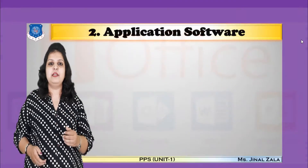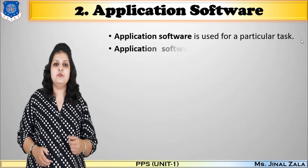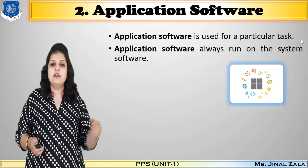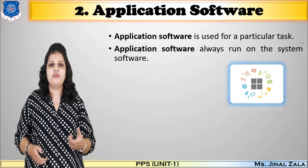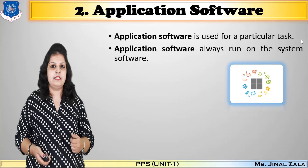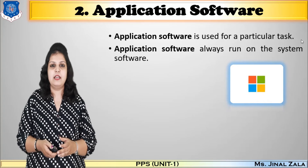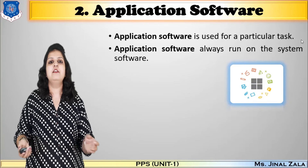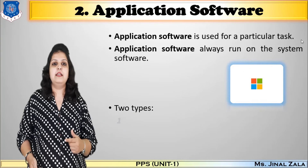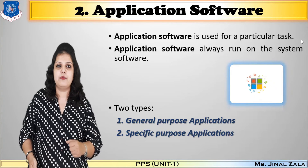Moving to the second type: application software. Application software is used for a particular single task. Unlike system software, which can do many different tasks, application software does only one specific task. One important thing to remember: application software always runs on top of system software. If the operating system is not present on your computer, you cannot use any application. Application software has two types: general purpose application and specific purpose application.